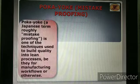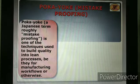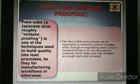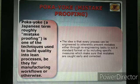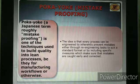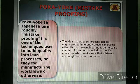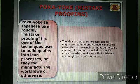Poka yoke is a Japanese term meaning mistake proofing, and is one of the techniques used to build quality into lean processes — whether for manufacturing workflow or otherwise. The idea is that every process can be engineered to inherently prevent mistakes, either through re-engineering tasks to a standard format or by including specific measures which ensure that mistakes are caught early and corrected before they escalate.